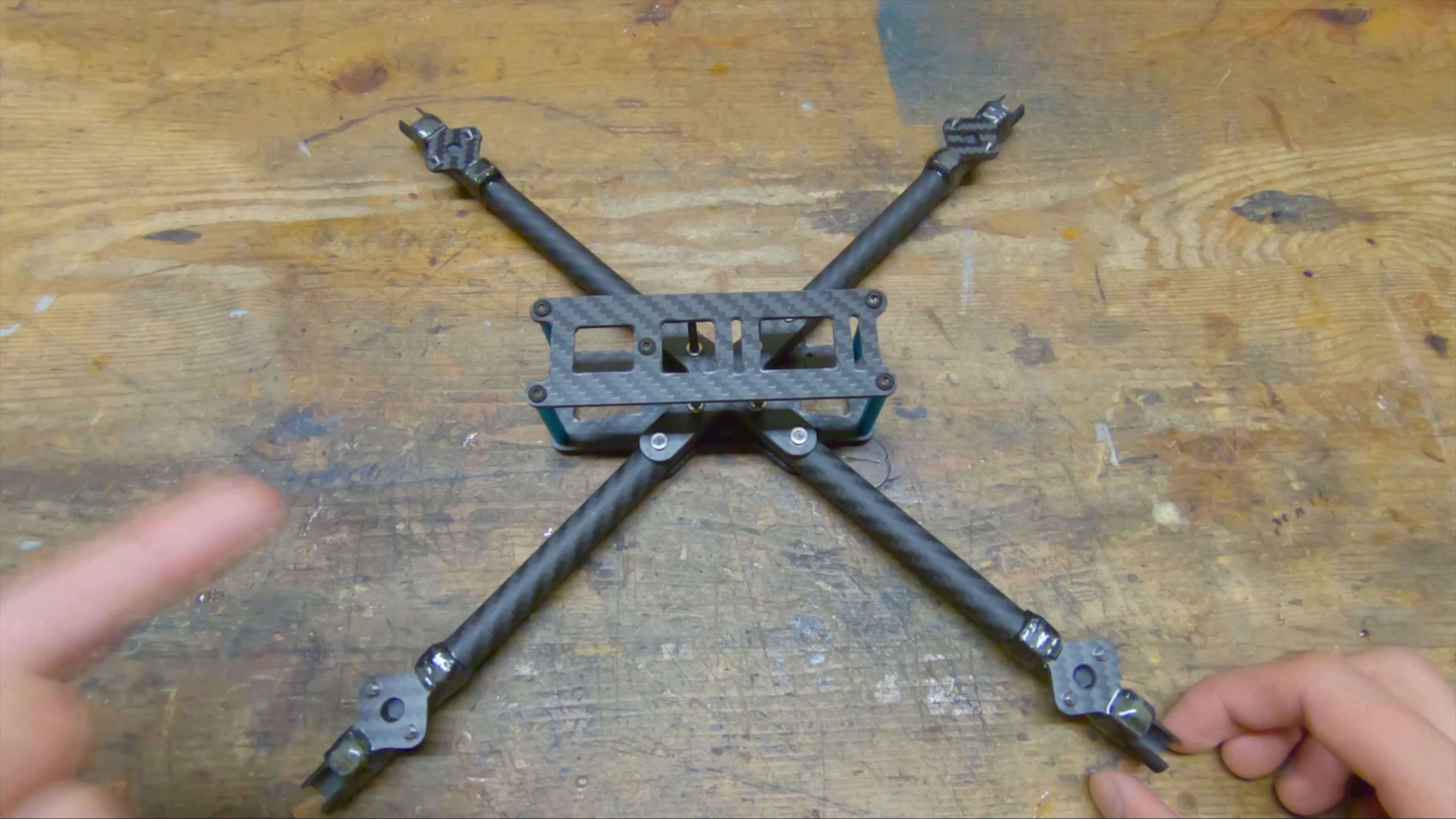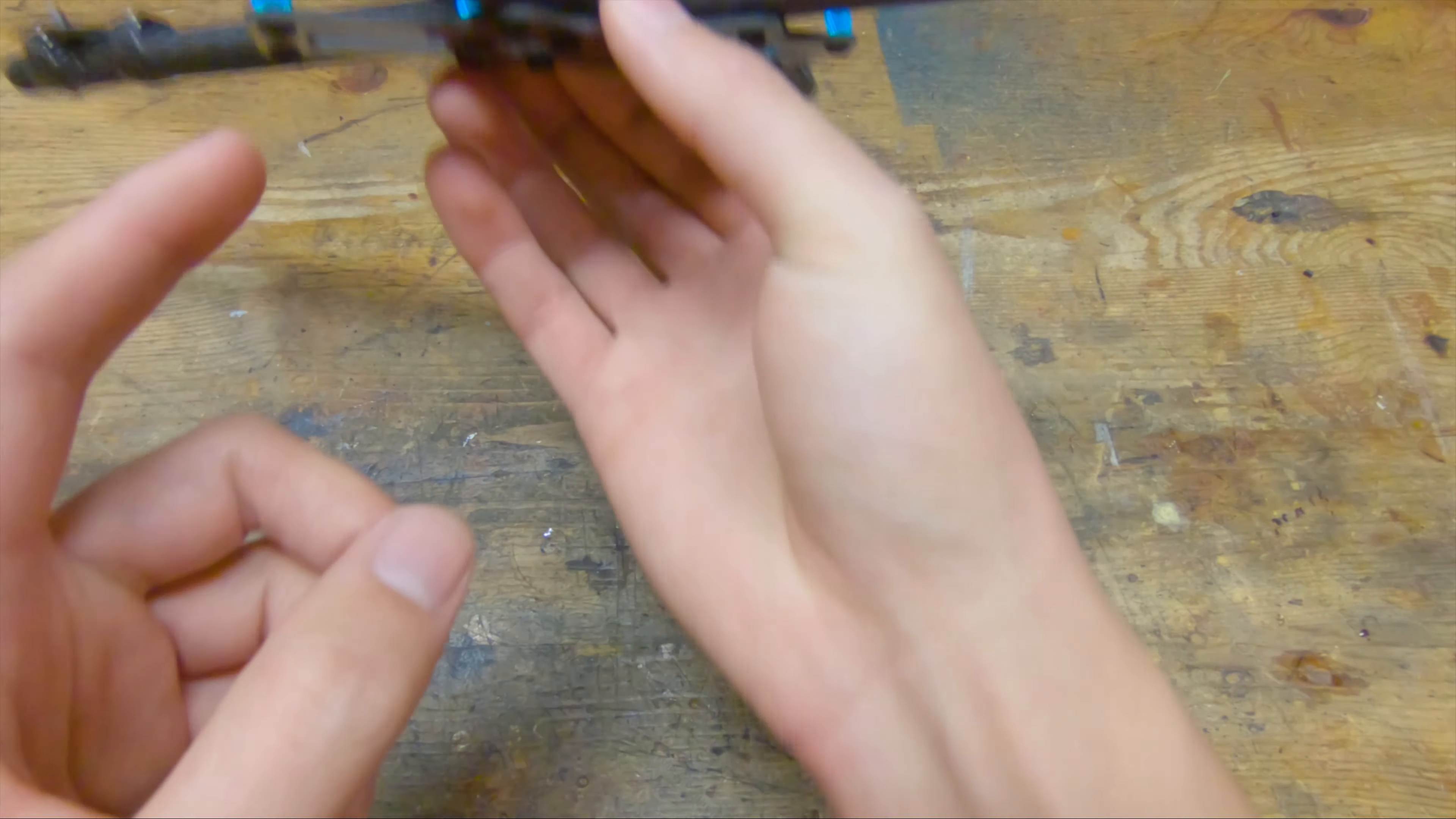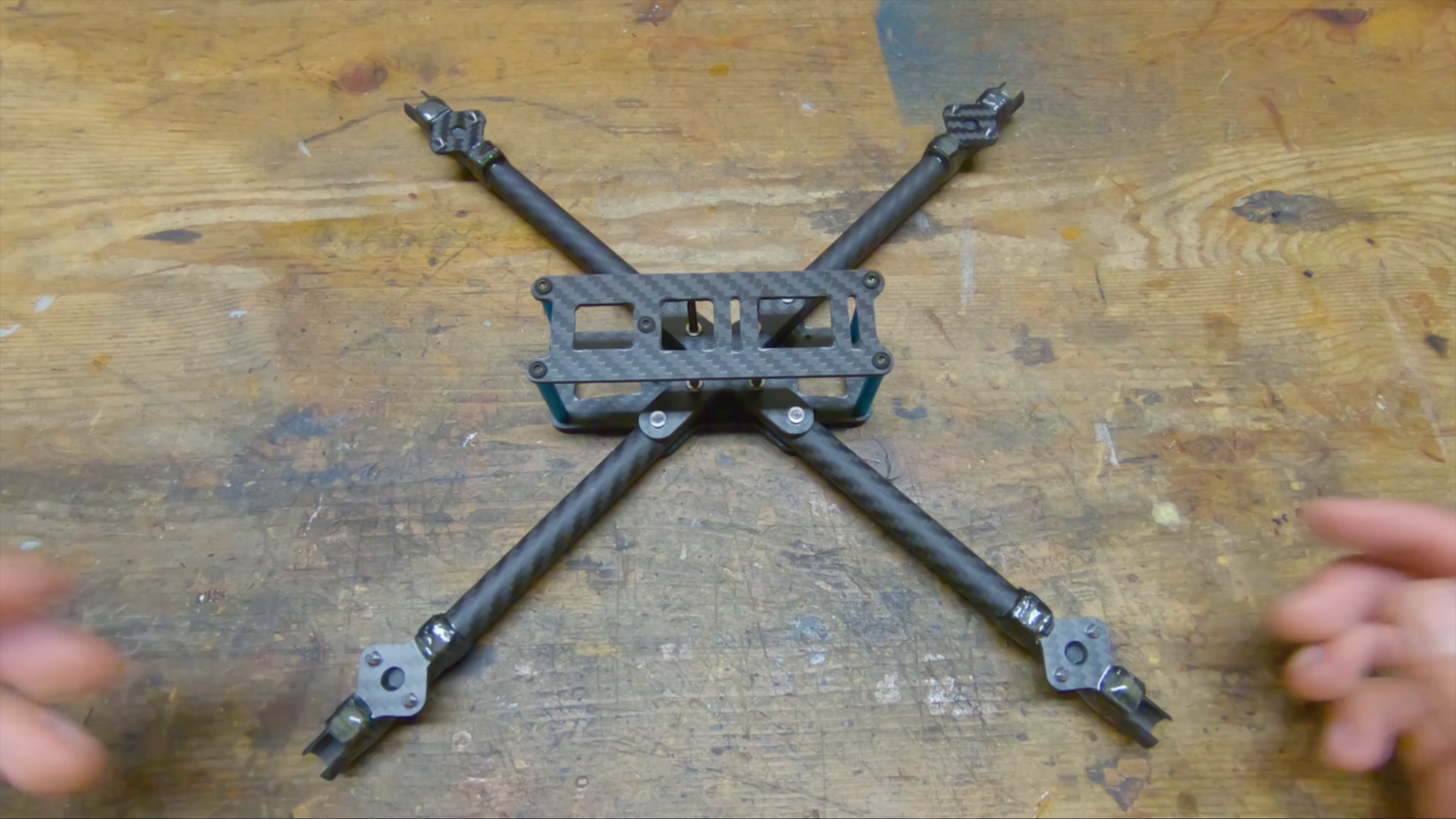The last advantage of tubular arms is possibly my favorite, and that is the fact that you can run your motor wires through the arms. On this quad there is this notch that the motor wires run through and then they come out either off to the sides or front and back in the middle here. That keeps the aesthetics clean, it keeps the aerodynamics clean, and it also prevents your motor wires from getting chopped off if you bend a prop.